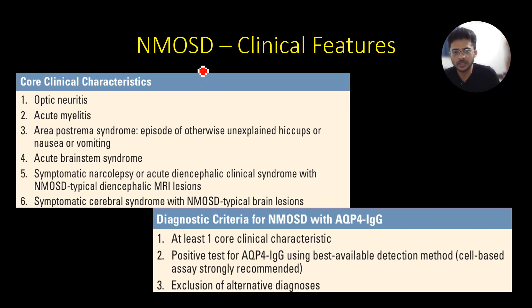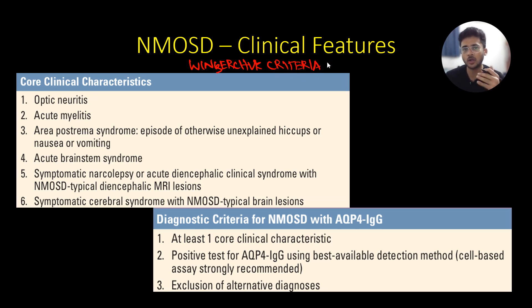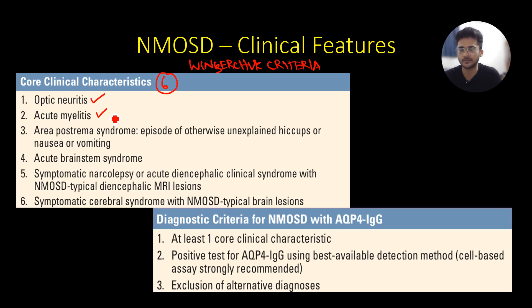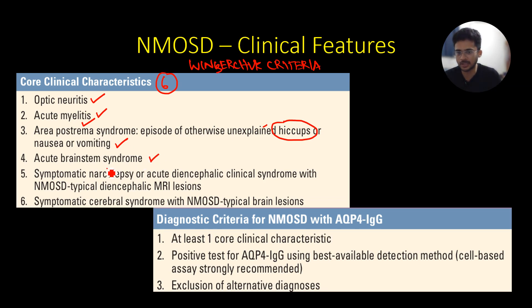The diagnostic criteria for NMOSD is known as the Wingerchuck criteria. Before going into the criteria, we need to understand the six core clinical characteristics: number one is optic neuritis; number two is acute myelitis, usually presenting as longitudinally extensive transverse myelitis; number three is area postrema syndrome with unexplained hiccups, severe nausea and vomiting; number four is acute brainstem syndrome; number five is symptomatic narcolepsy or acute diencephalic syndrome; and number six is symptomatic cerebral syndrome.